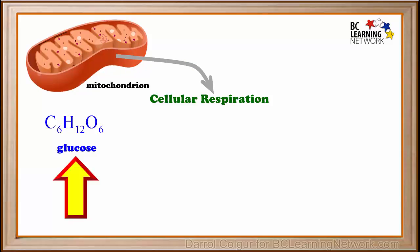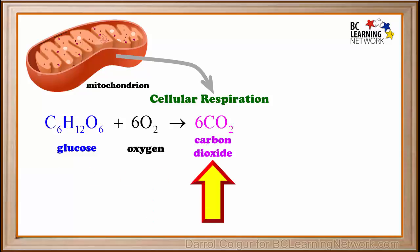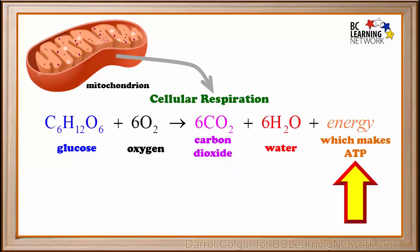In cellular respiration, glucose — a nutrient carried to the cell by the bloodstream — reacts with oxygen, which is also carried by the bloodstream, to form carbon dioxide, water, and energy, which is used to make a high energy compound called ATP. ATP is used by muscle cells to make them contract and move body parts.